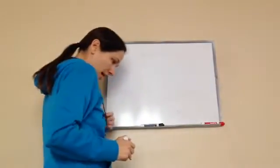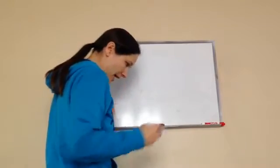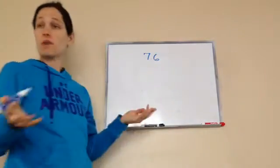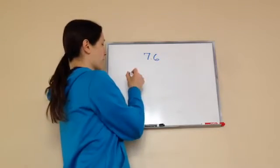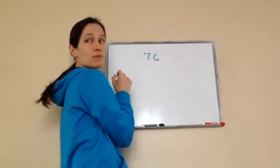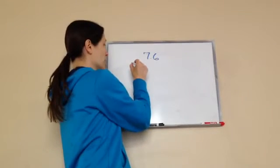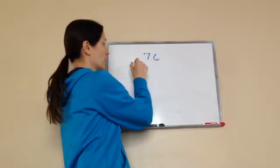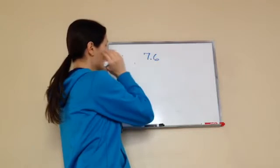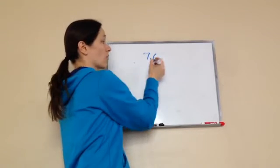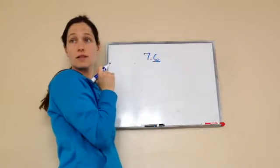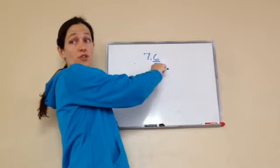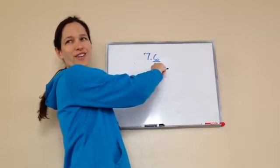Let's look at this one. They give us the number 7.6. Now, this is not money, but it's still a decimal number. Between which two numbers is 7.6? The six is in the tenths place. So there are ten. What two whole numbers is it in between? Seven and eight. So what would be our halfway point? Seven point five.